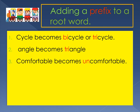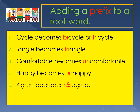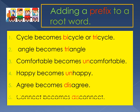The root word is 'comfortable'. If we add 'un' as a prefix to 'comfortable' it becomes 'uncomfortable'. The root word is 'happy'. If we add the prefix 'un' to 'happy' it becomes 'unhappy'. The root word is 'agree'. When we add the prefix 'dis' to 'agree' it becomes 'disagree'. The root word is 'connect'. When we add 'dis' to 'connect' it becomes 'disconnect'.